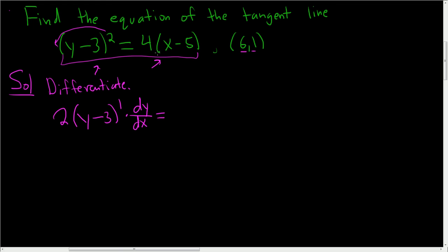This is equal to, now here, you can multiply this out if you like, I will. This is 4x minus 20. So when you take the derivative here, you just get 4.